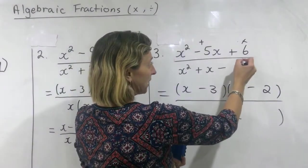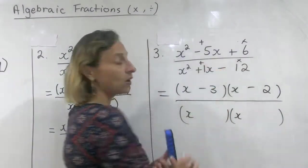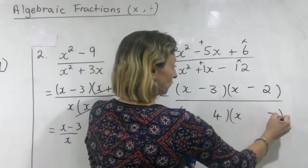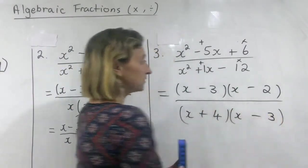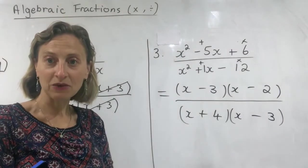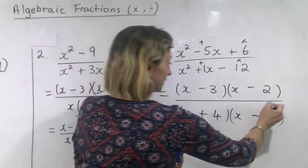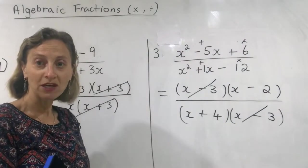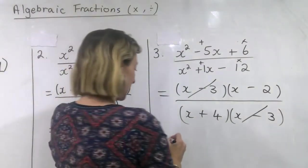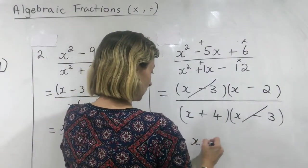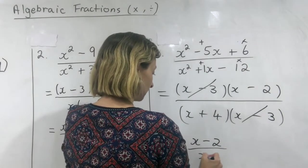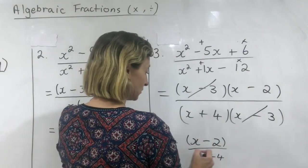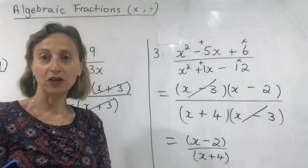Down the bottom: multiplying to give twelve, adding to give one — four and three: plus four, minus three. No great surprises that there is something to cancel. I'll probably be a little bit concerned and check my working if there was nothing to cancel. Don't forget to write down what's left. If you want to put the brackets in you can; if you don't want to, you don't have to.